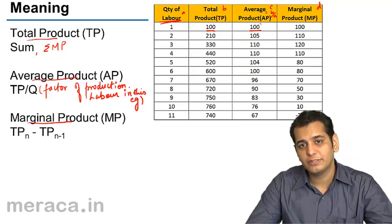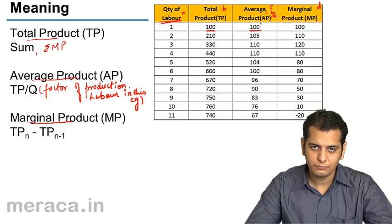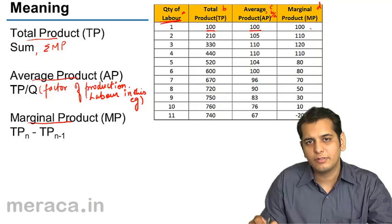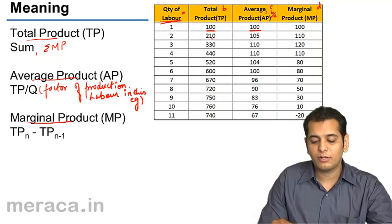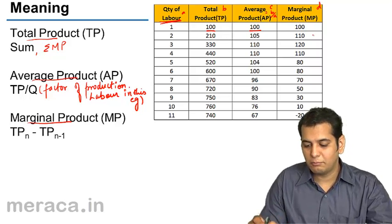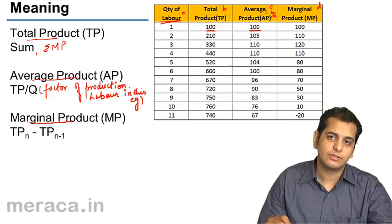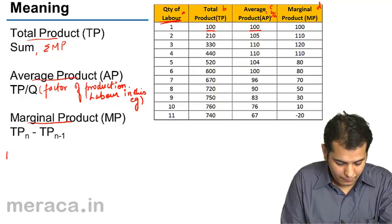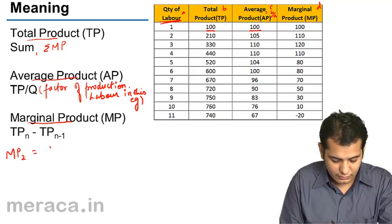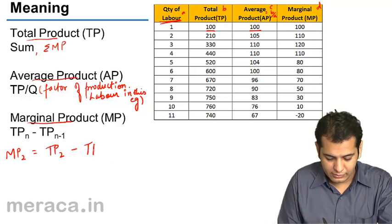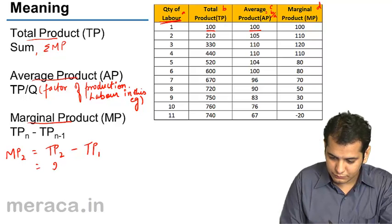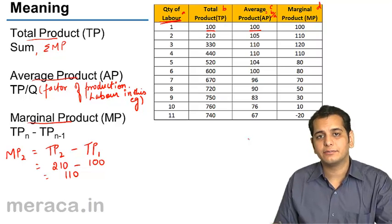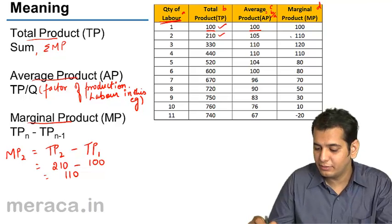Now let's understand this with the help of Marginal Product. When one labor is employed and Total Product is 100, the Marginal Product is also 100. When the second labor is employed, the Total Product is 210. The Marginal Product at this level is 110 — calculated as TP at the second level minus TP at the first level: 210 minus 100 equals 110.